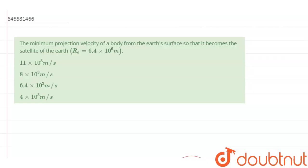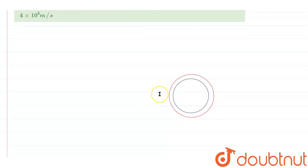The minimum projection velocity of a body from the earth's surface so that it becomes the satellite of the earth will be. So let's say this blue radius is our earth, and this red radius is the path of the satellite.